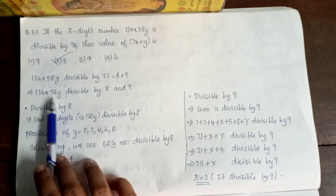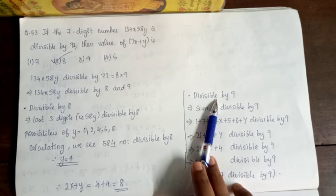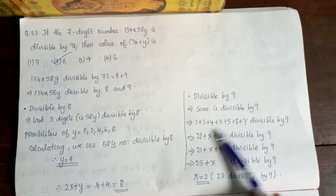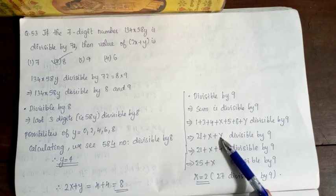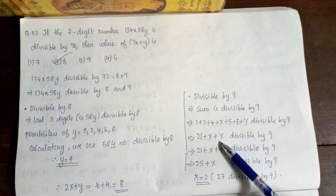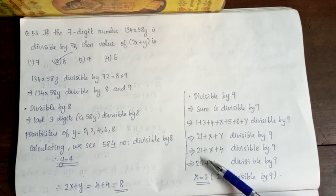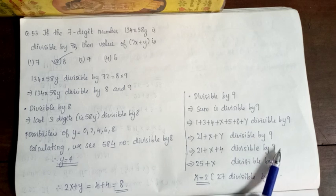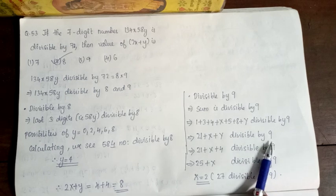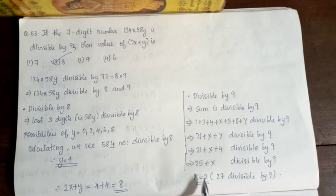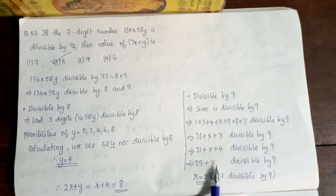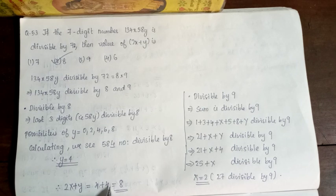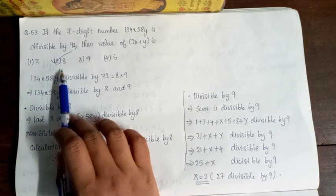For divisibility by 9, the sum of digits of 134x584 must be divisible by 9. Solving gives x equals 2. So substituting, 2x plus y equals 2(2) plus 4 equals 8. So our option is 2.